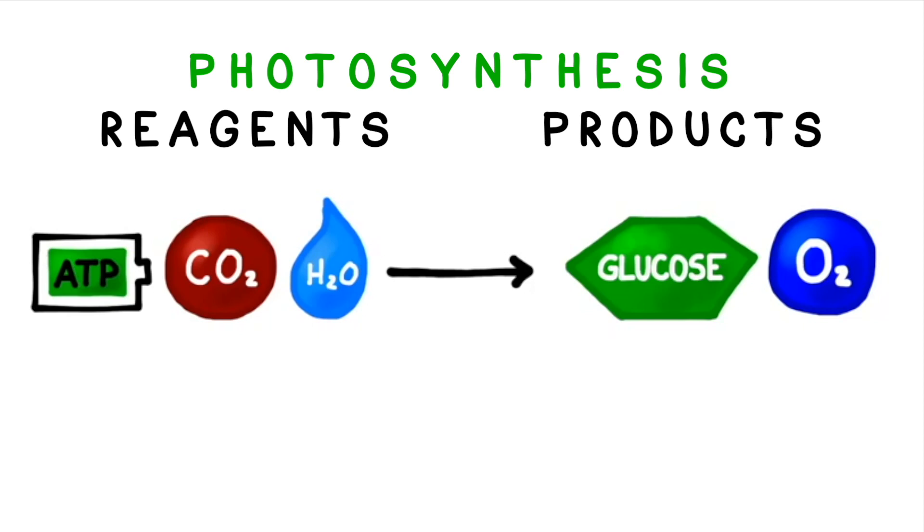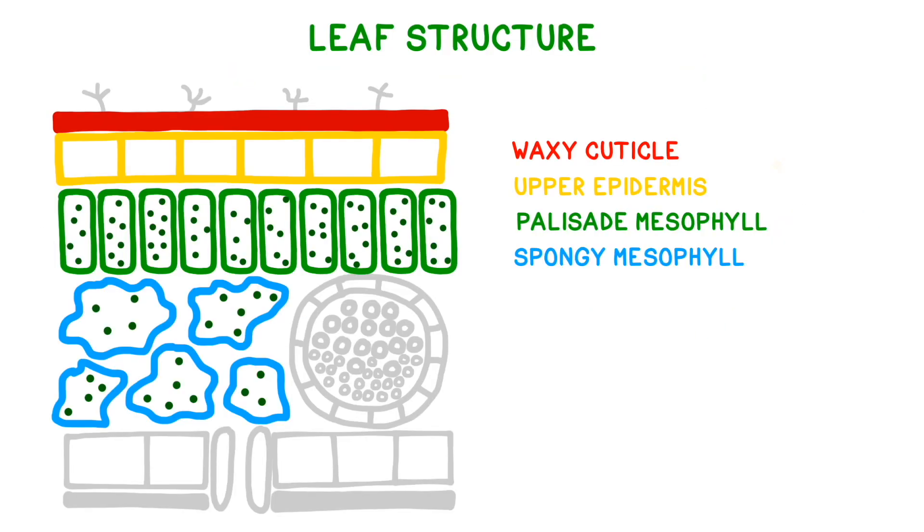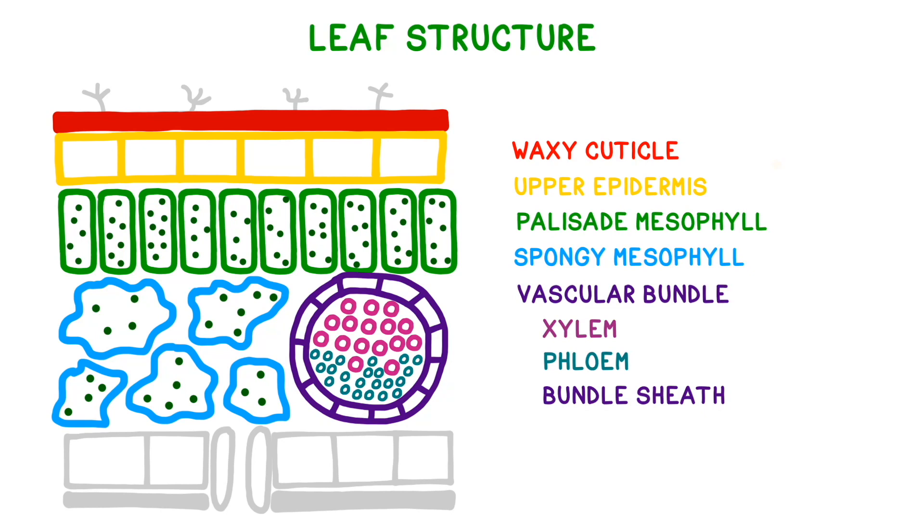During photosynthesis, plants use energy from sunlight to jumpstart the conversion of carbon dioxide and water into glucose and oxygen. As we go through this video, notice which structures are handling each of these reagents and products.